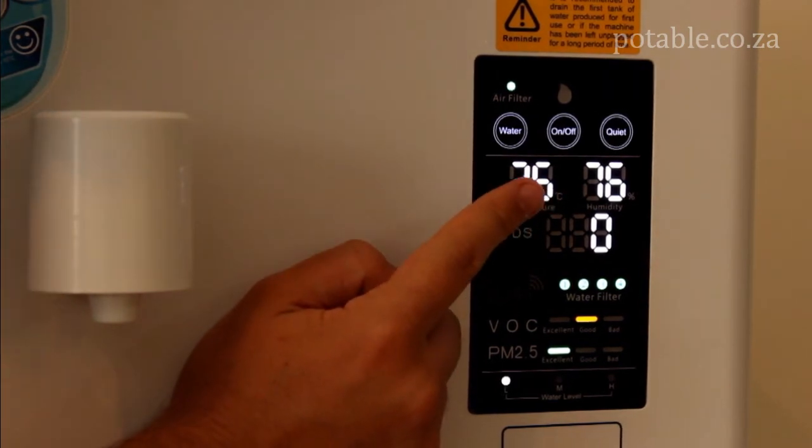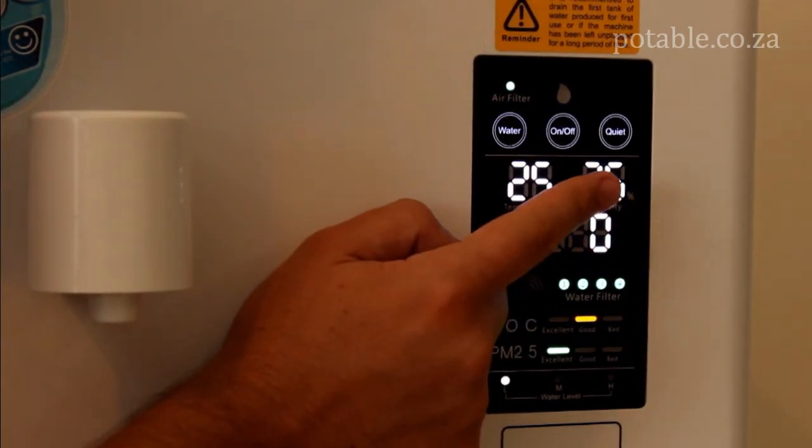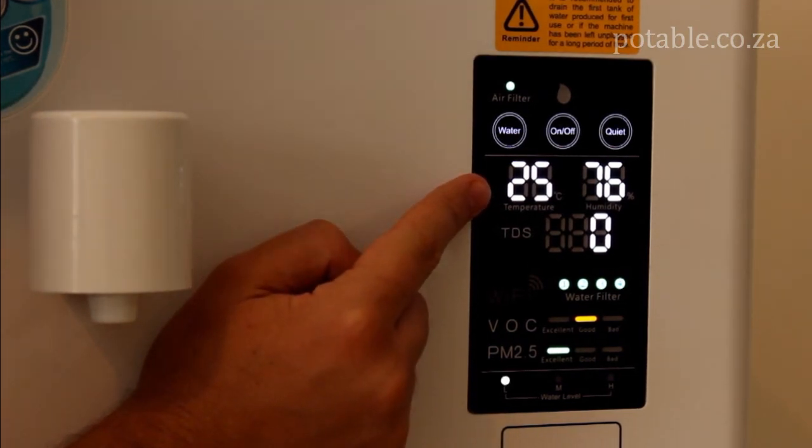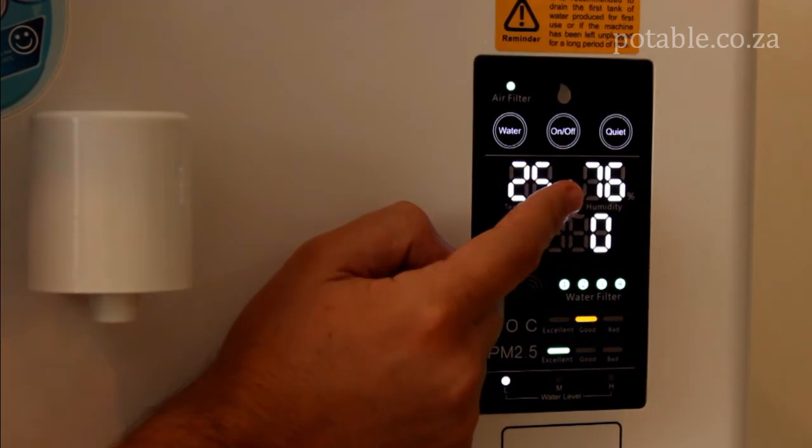Over here we have the temperature and humidity. As you can see here in Cape Town it is currently 25 degrees celsius and the humidity is 76% quite high.